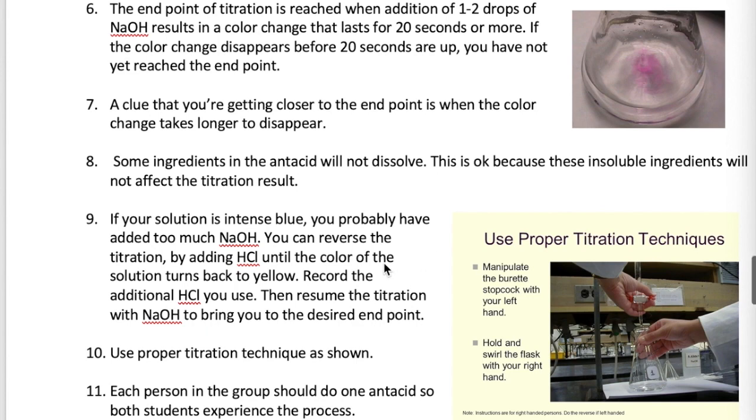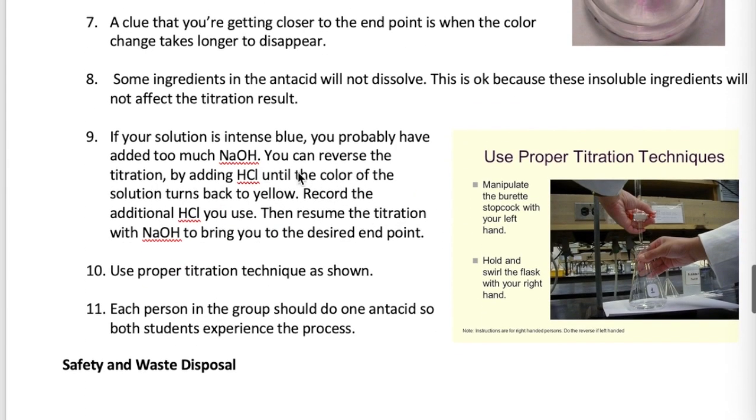Now, note that if you have an intense blue color, it's likely that you have gone way past the endpoint. This doesn't mean that you have to repeat the whole experiment again. What you have to do is reverse the titration. The way you do this is by adding HCl to bring the color of the solution back to yellow. After that happens, you can then slowly titrate back with NaOH to get the color to the endpoint of green or light purple. If you do carry out the reverse titration, make sure you record all the additional volumes of HCl and NaOH that you use.